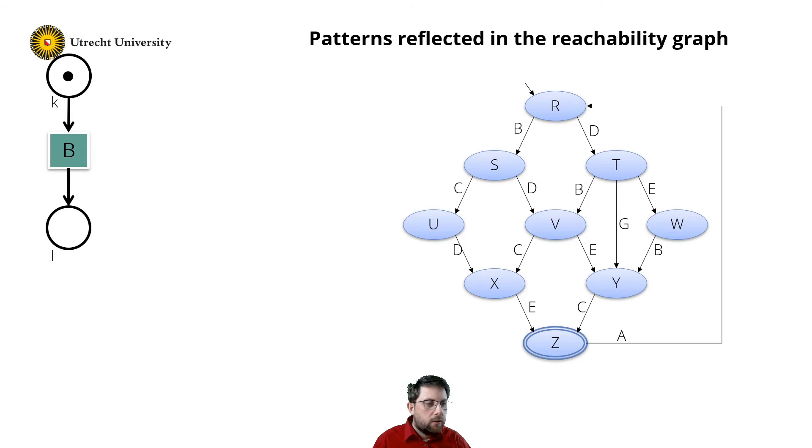If I apply this net, then transition B can fire, as there is a token in place K. That means that R is the marking in which place K has one token, and that S is the state in which there is one token in place L.